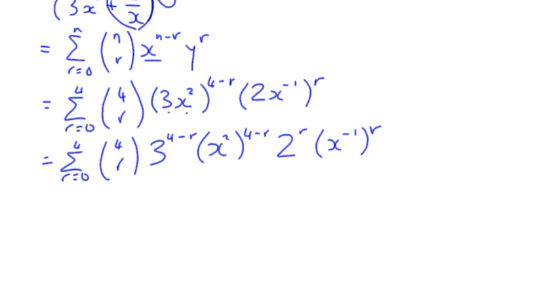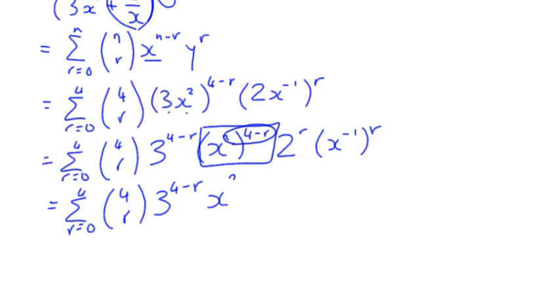If you have a look at that, we've got one more level of simplifying that we can do, because we can say that our numbers are 3 to the power 4 minus R. This term here, which is X² to the power 4 minus R, when we multiply those two powers together, we get X to the power 8 minus 2R. We've got 2 to the power R, and then the second term becomes times X to the power negative R, multiplying the two powers together.